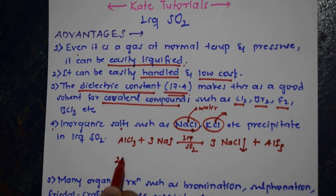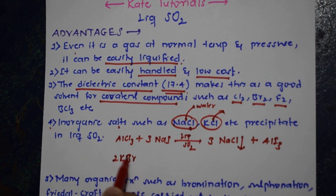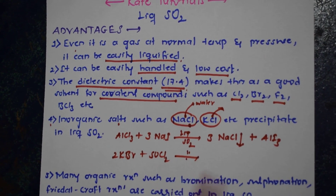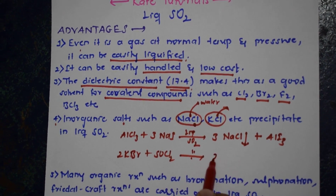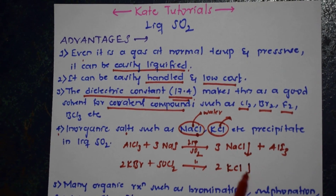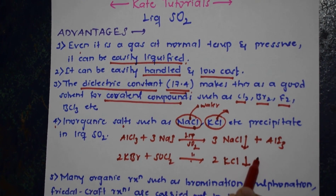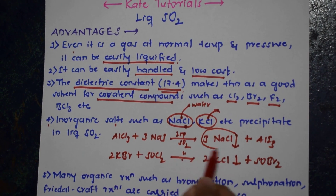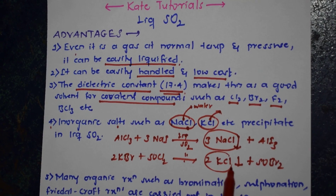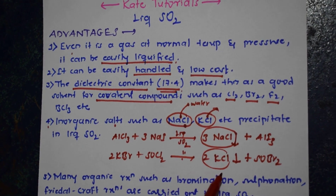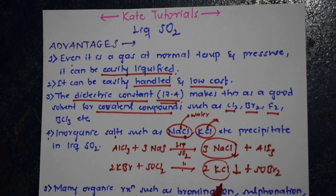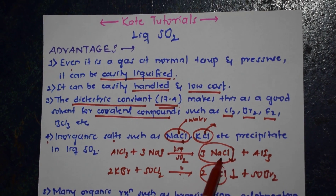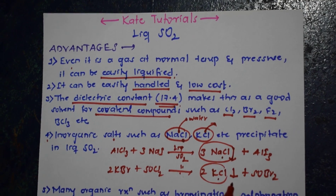In the same way, consider another reaction: 2KBr plus SOCl2 in liquid sulfur dioxide gives 2KCl (precipitate) plus SOBr2. NaCl and KCl will not precipitate in aqueous medium (water), but in liquid sulfur dioxide or liquid ammonia they undergo precipitation.